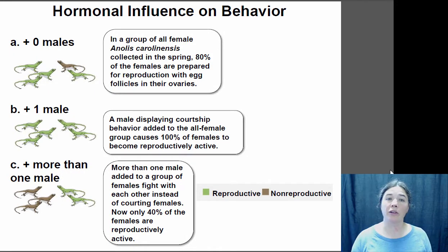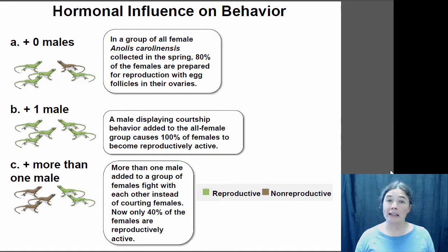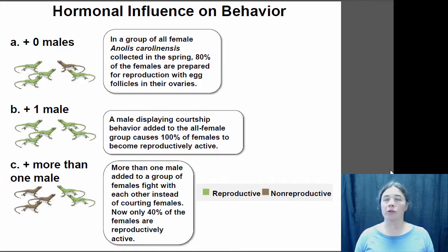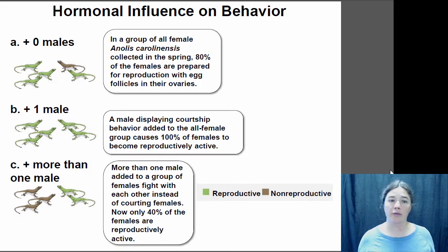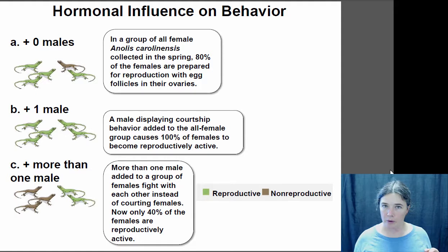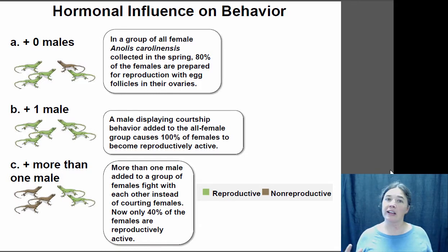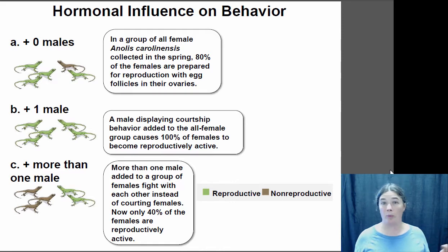A lot of behaviors are regulated by hormones circulating in the animal's system, and those hormones can be influenced by the environment. For example, in a group of anole lizards that is all females, about 80% will be in reproductive condition during the reproductive season on their own. If you add one male, his courtship triggers the onset of reproductive hormones, and all of the females become reproductively active. But if you put multiple males in the group, the males fight each other rather than courting females, which increases stress hormones that suppress reproductive hormones — so only about 40% of females are reproductively capable.